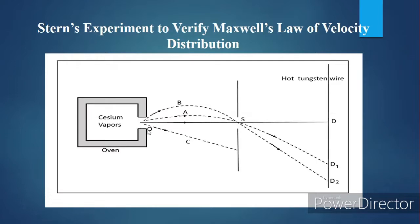In front of the oven there is an opening, and in front of that opening we are keeping a slit. The slit has a very narrow passage. Then a hot tungsten wire is kept here, and the tungsten wire will ionize the atoms coming from the hot oven.